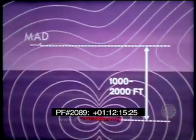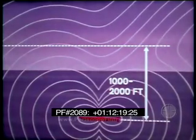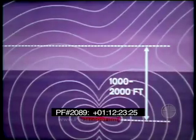Magnetic anomaly detection, MAD, is an ASW sensor unique to aircraft. It measures the disturbance in the normal Earth's magnetic field caused by large metal objects, such as submarines. It is a very short-range sensor, effective at a maximum of 1,000 to 2,000 feet. Usually, it is used to localize and verify a contact made by another type of sensor.